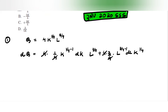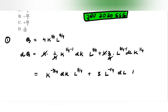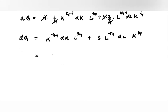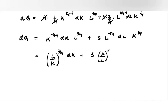Simplifying, you will get k to the power minus 3 by 4 dk times l to the power 3 by 4, plus 3 l to the power minus 1 by 4 dl times k to the power 1 by 4, equals dq. This simplifies to (l/k) to the power 3 by 4 dk plus 3(k/l) to the power 1 by 4 dl equals dq.